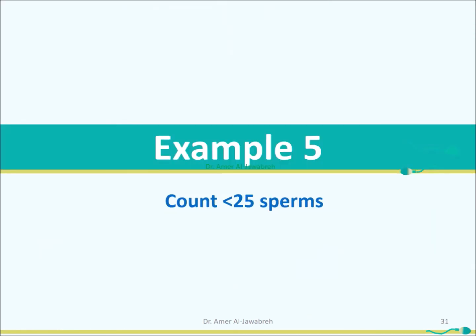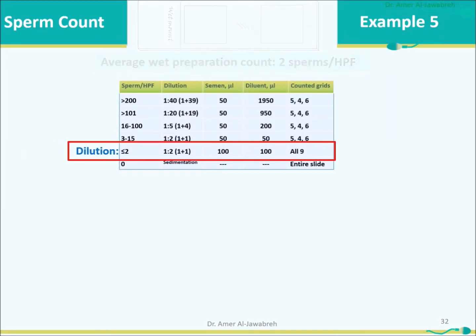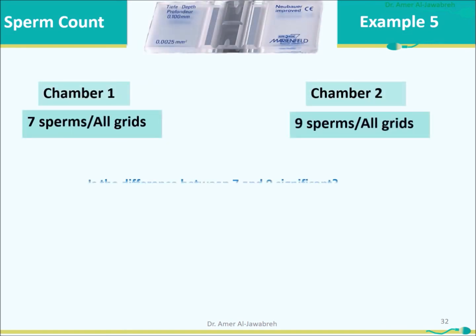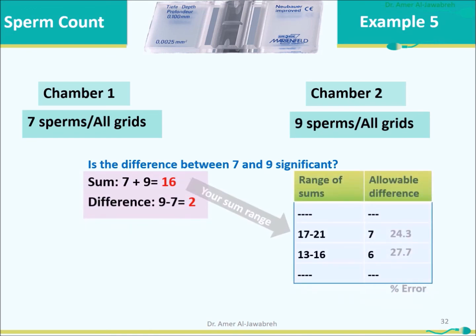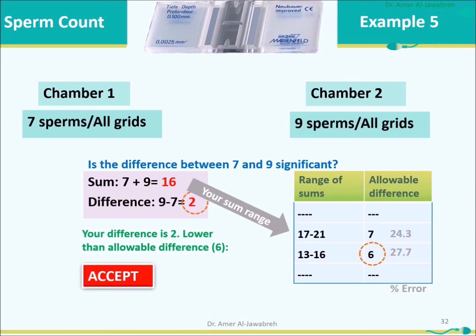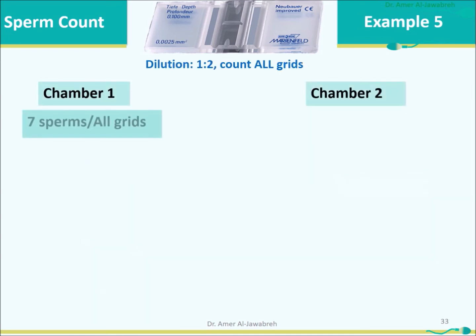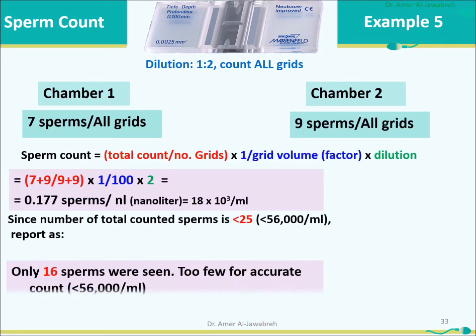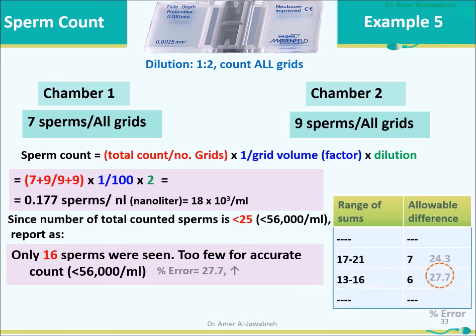Example 5 — Count less than 25 sperms. Average prep count: 2 sperms per high power field; dilution 1:2 using 100 µL of semen. In all 9 grids of the 2 chambers, only 16 sperms were counted. Difference of 2 is lower than allowable 6 — accept count. Since fewer than 25 sperms were counted, report as: 'Only 16 sperms were seen. Too few for accurate count. Less than 56 thousand per mL.' Note how high the percent error is.